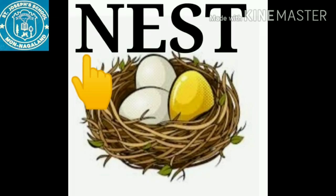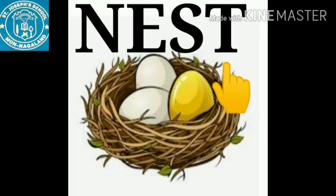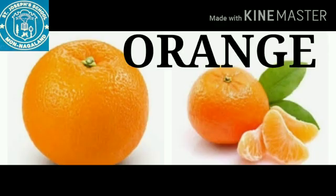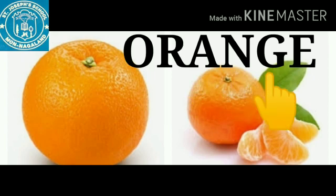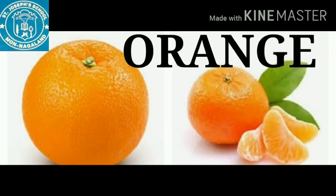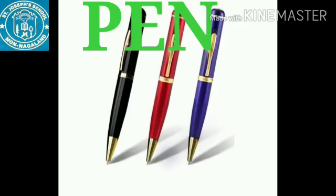N for nest. N, E, S, T — nest. O for orange. O, R, A, N, G, E — orange.